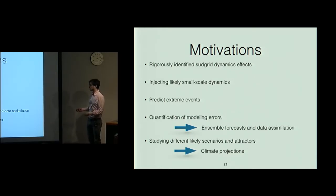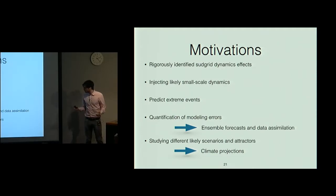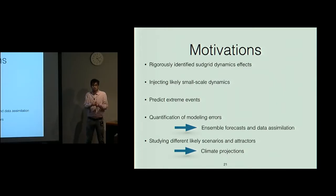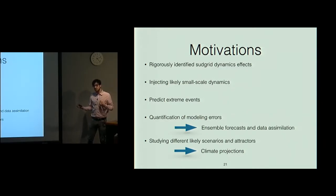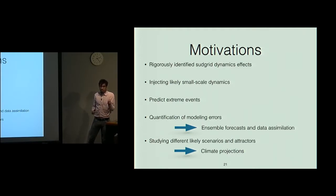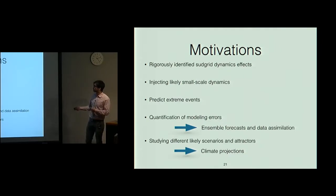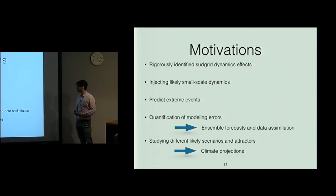In data assimilation, you want to use both model and observation information. But if you have one model value of 11 degrees and one observation of 13 degrees, you cannot just average them. It's better to have a probability density function from your observation accounting for instrument measurement error, and a PDF from your model accounting for model error. Quantifying model error is very difficult due to chaotic effects. This is one reason we developed this model — to quantify the error due to coarse resolution in numerical simulations.